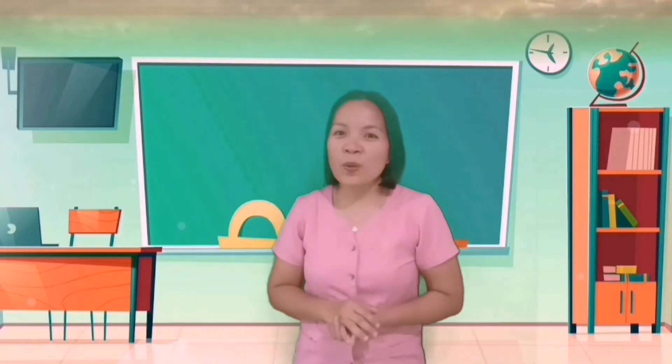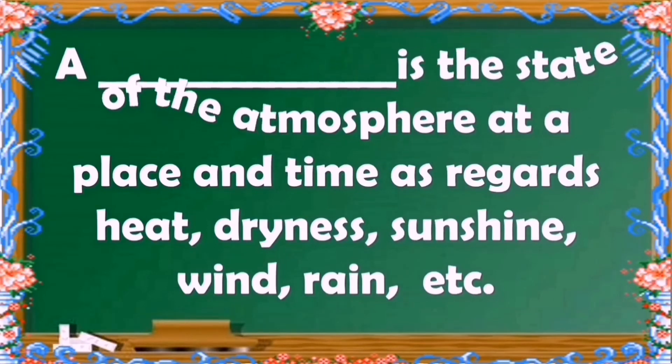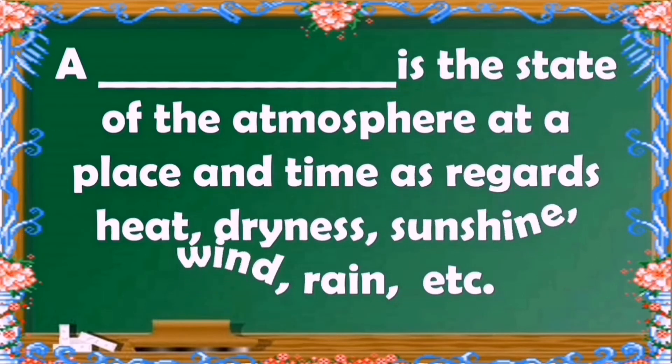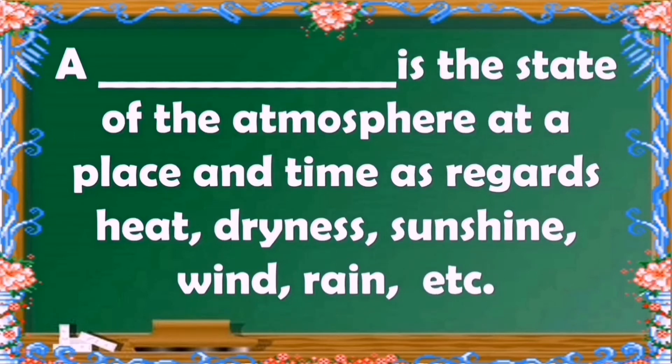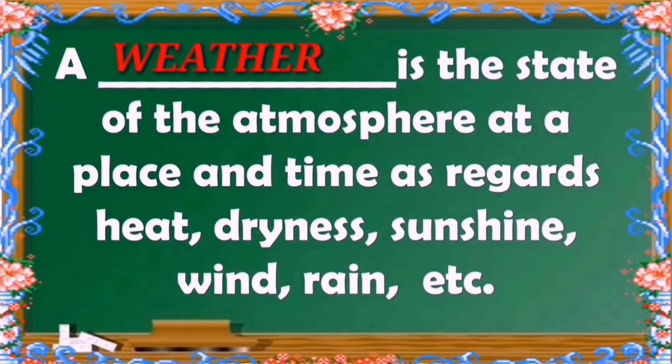Today we are going to find out how the weather can help us decide what to do every day to keep us safe. But before that, I want you to write on a sheet of paper the correct answer shown on your screen to complete the sentences. A blank is the state of the atmosphere at a place and time as regards heat, dryness, sunshine, wind, rain, etc. What is the correct answer? Weather is the correct answer.